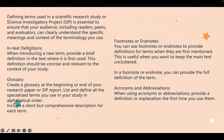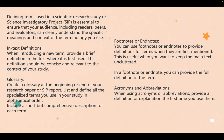An example of in-text definition: 'In this study, photosynthesis — the process by which plants convert light energy into chemical energy — is a key factor in our investigation.' This can appear in any part of your paper, usually in the introduction. For footnotes, the definition of photosynthesis is placed at the bottom of the page. For acronyms: 'The United Nations Educational, Scientific, and Cultural Organization (UNESCO) works to promote global education.'